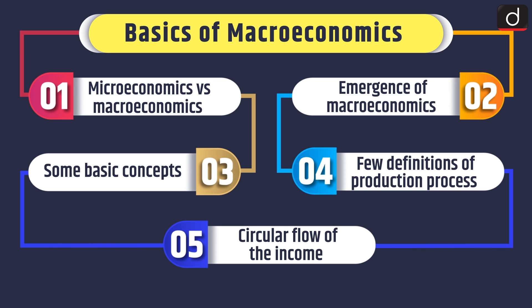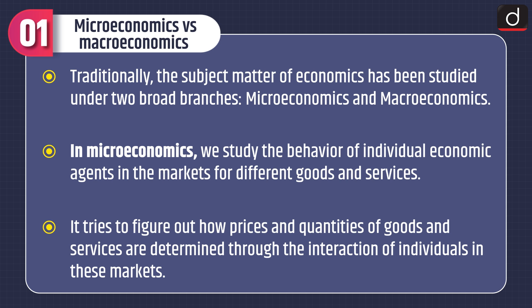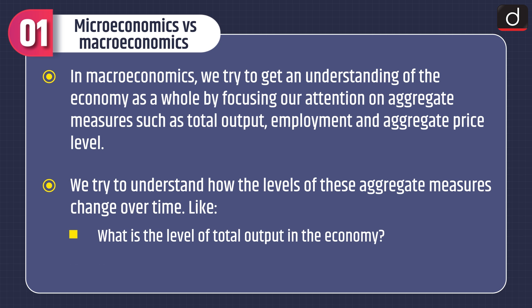First of all, let's compare microeconomics versus macroeconomics. Traditionally, the subject matter of economics has been studied under two broad branches: microeconomics and macroeconomics. In microeconomics, we study the behavior of individual economic agents in the markets for different goods and services. It tries to figure out how prices and quantities of goods and services are determined through the interaction of individuals in these markets. While in macroeconomics, we try to get an understanding of the economy as a whole by focusing our attention on aggregate measures such as total output, employment and aggregate price level.